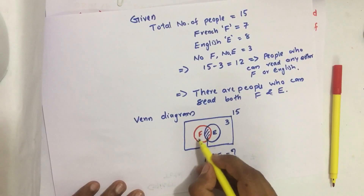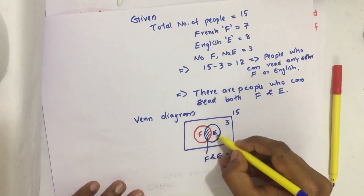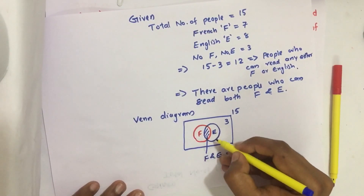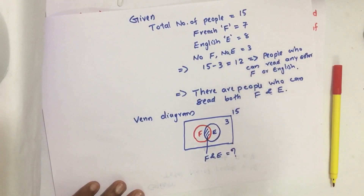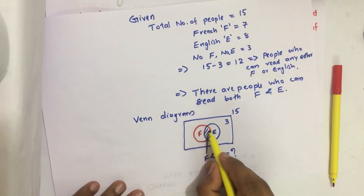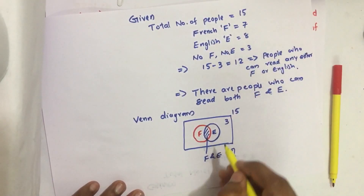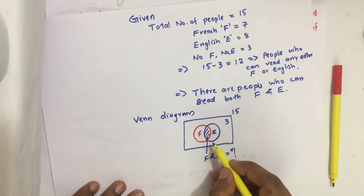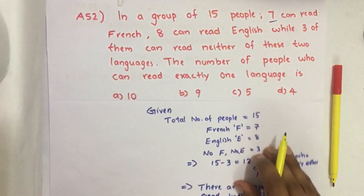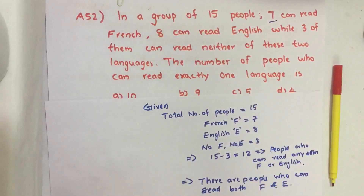We will get people who can read only French and only English — this area indicates only French and this area indicates only English. The total we know is 12, and if we subtract the common area from this, we get our required answer: the number of people who can read exactly one language.